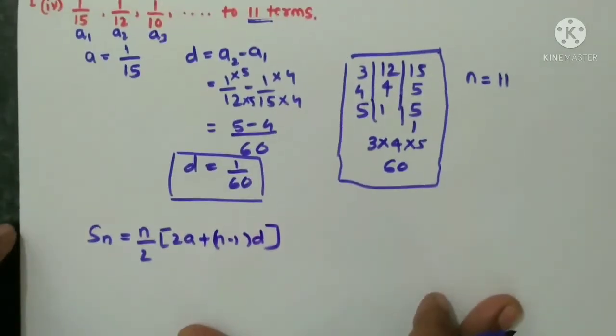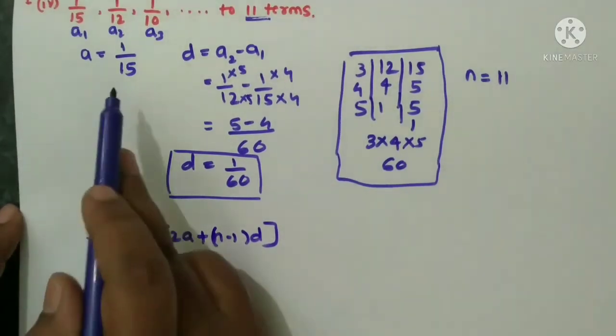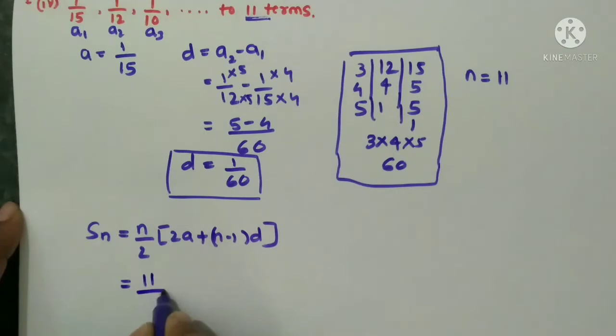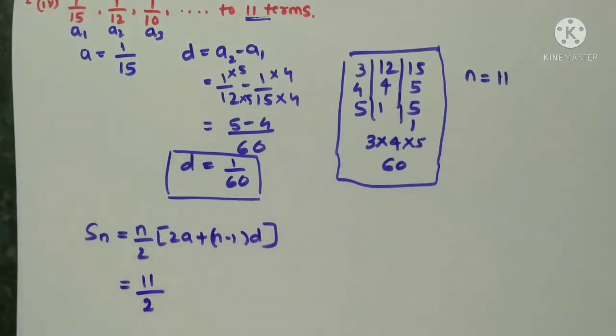So here already we know that a value is 1 by 15 and n value will substitute first. Here you see n is an odd number, it is not divisible by 2. So that only I told you already, if it is even directly you can cancel off. If it is not even just you keep as it is, last you cancel it after simplification. First you simplify the bracket, then you cancel with this 2.